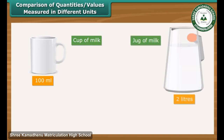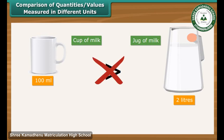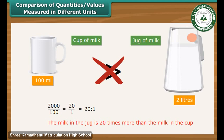When comparing quantities measured in different units, we must convert them to the same units first. Vinita has 100 ml of milk in a cup and 2 liters of milk in a jug. We express 2 liters as 2000 ml so the quantities are comparable. The ratio is 2000 by 100, which is 20 by 1, or 20 is to 1. Therefore, the milk in the jug is 20 times more than the milk in the cup.